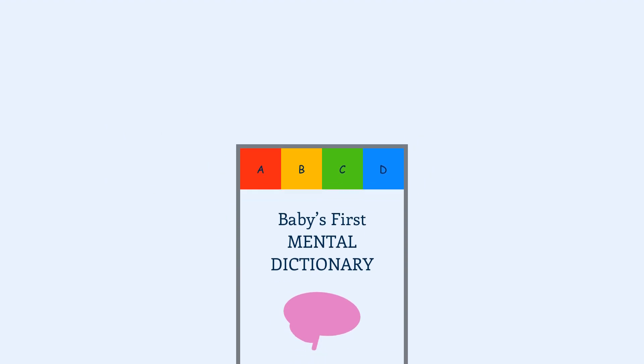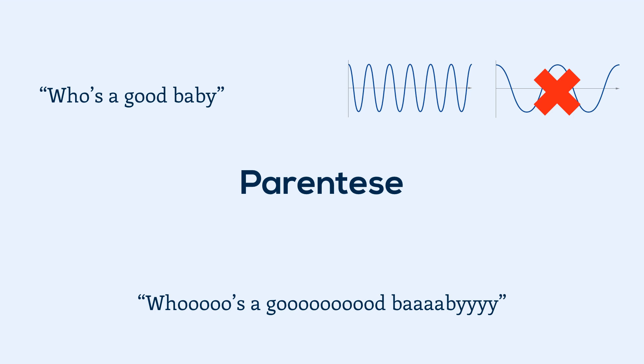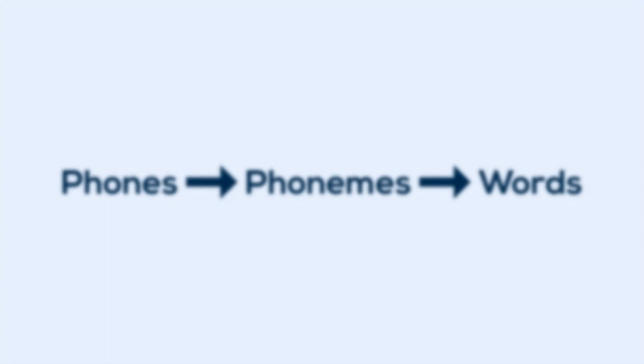And throughout this process is where parentese comes into play. That kind of over-exaggerated speaking with its shorter words, higher pitch, and exaggerated vowel sounds reduces the complexities of everyday language. It tunes out the noise, so to speak. Creates clarity and contrast. So that the language children receive is as easily processed as possible.